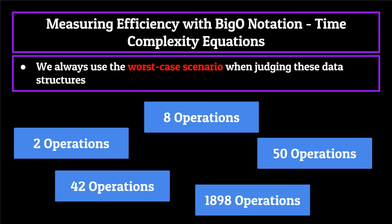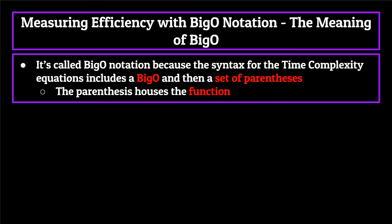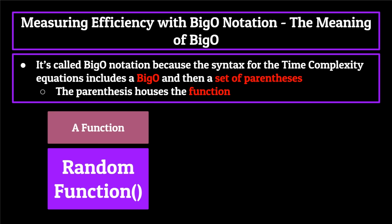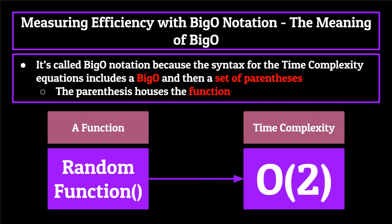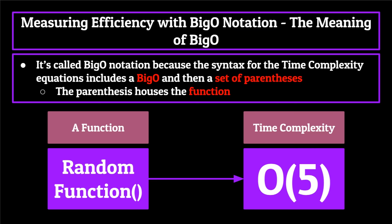An important thing to note is that we always use the worst case scenario when judging these data structures, because we always want to prepare for the worst and know which data structures are going to be able to perform under the worst conditions. The reason it's called big O notation is because the syntax for these particular equations includes a big O and then a set of parentheses. Inside these parentheses will include some function which will correctly return the number of operations needed to be run by the computer. For example, a time complexity equation of O(2) means it takes two operations from the computer before our function can finish. These are examples of time complexity equations which run in constant time, meaning no matter the size of our data set, it will always take the same number of instructions to run.